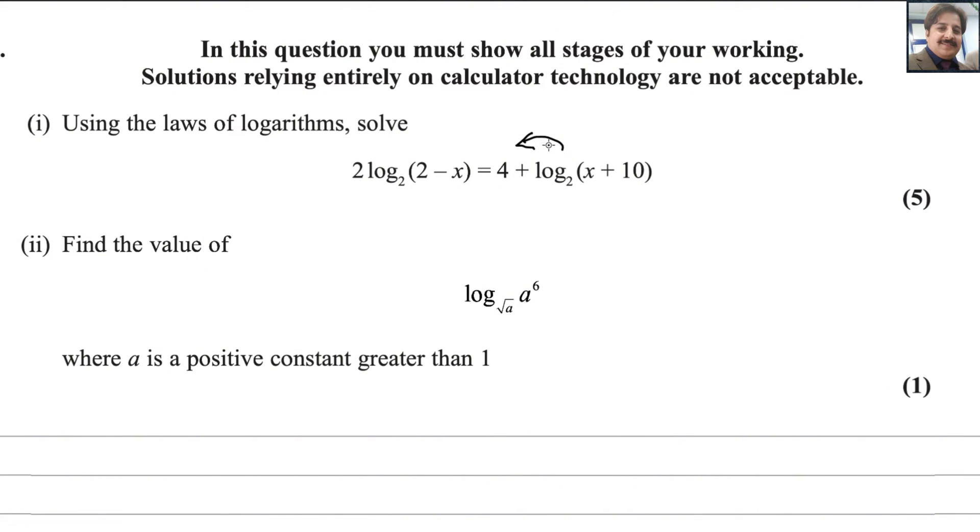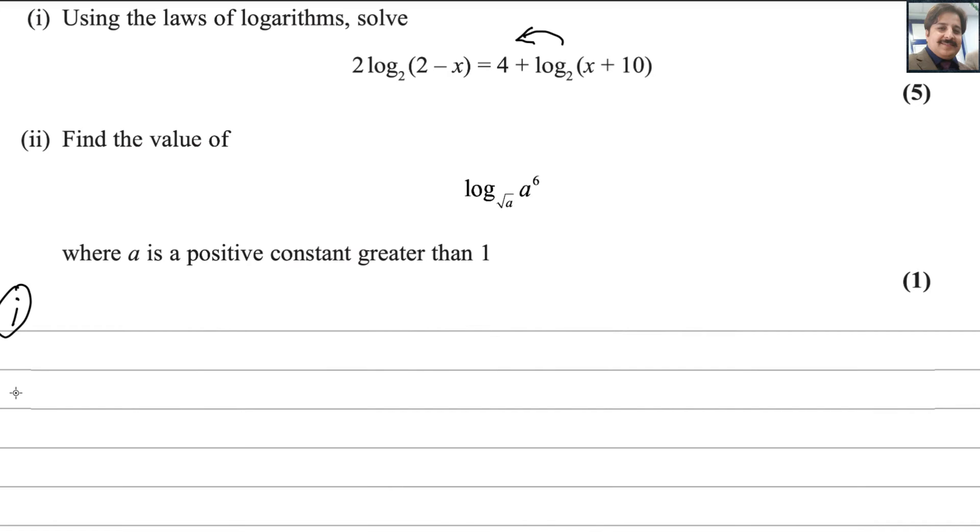We will move this value to the left side. If you bring that value to the left side, it becomes minus. So 2log₂(2-x) - log₂(x+10) = 4.